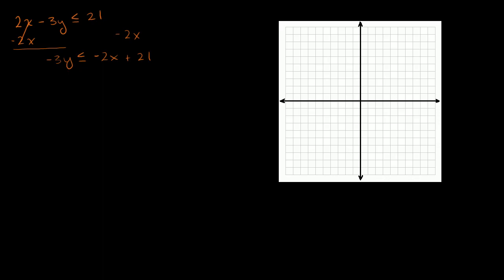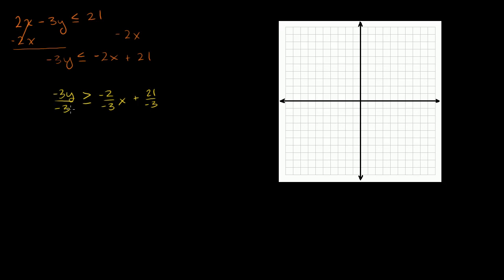Then we can divide both sides by negative 3. Remember, when you divide or multiply by a negative number, you swap the inequality. So you get y is greater than or equal to 2/3 x minus 7. That's this first inequality.